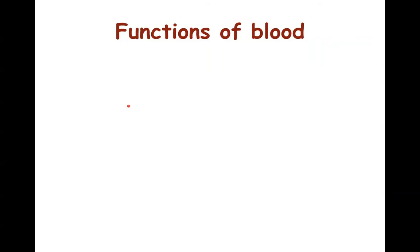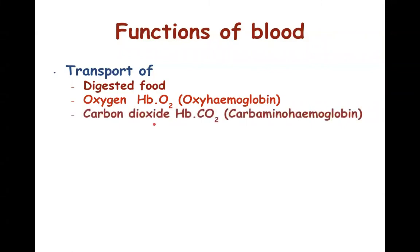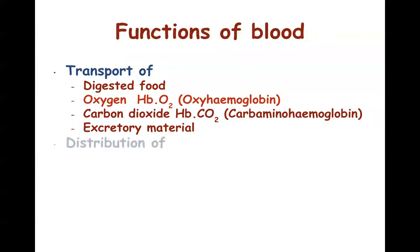The various functions of blood include transport of digested food. It helps in the transportation of oxygen as oxyhemoglobin, with the formula Hb.O2 — the dot indicates its loose chemical combination. It transports carbon dioxide as carbaminohemoglobin. When it is oxyhemoglobin, it is bright red; when it is carbaminohemoglobin, it is dark red. It also helps in the removal and transportation of excretory material, distribution of hormones, and distribution of heat.